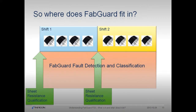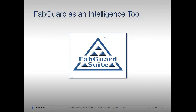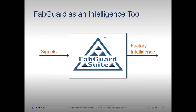FabGuard uses state and process information to detect faults and mitigate the risk of scrap in the time between standard tool qualifications. I like to think of FabGuard as a factory signals intelligence tool: signals go in, intelligence and control come out. This framing reveals the amazing range of questions that can be answered using the collection and analysis tools that FabGuard provides.